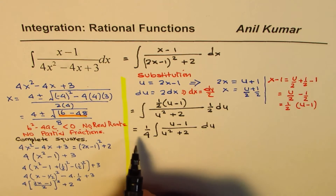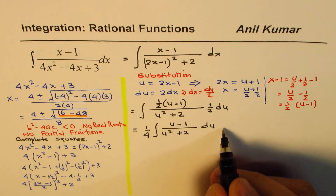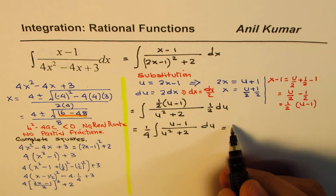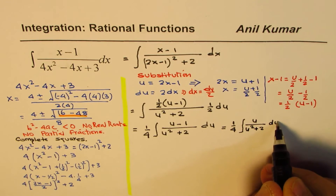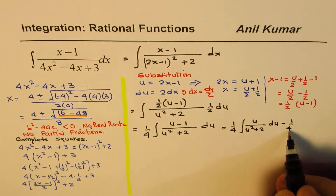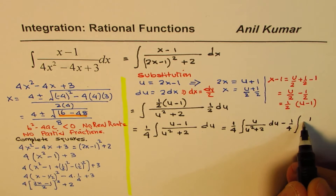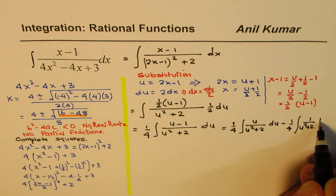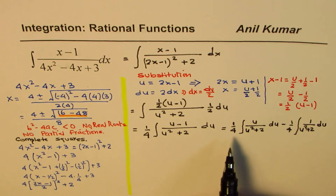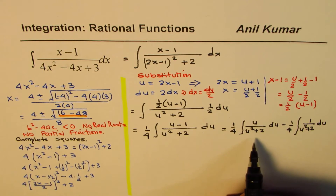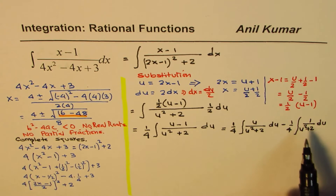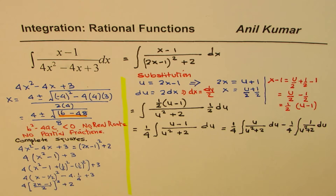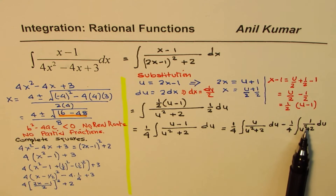Applying the properties of integrals, we split this into two parts: one-fourth times the integral of u over u squared plus 2, du, minus one-fourth times the integral of 1 over u squared plus 2, du. The first part will be solved by a further substitution, and the second part can be solved directly using the arctangent formula.